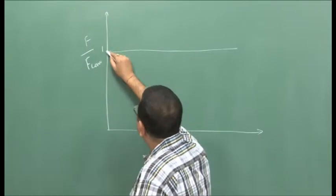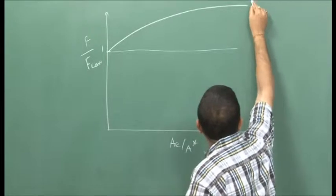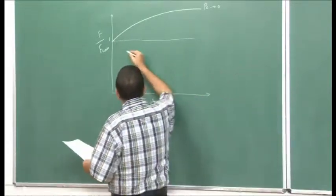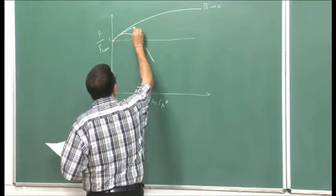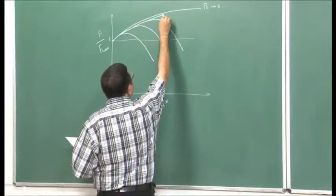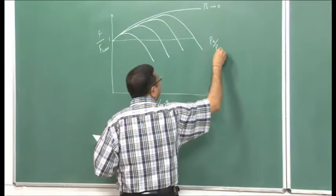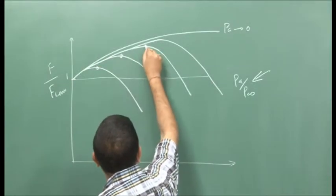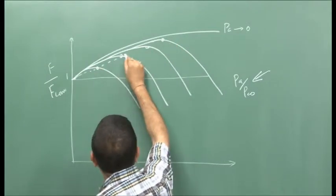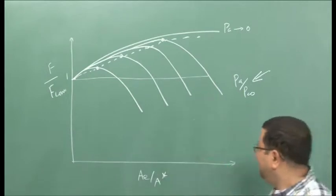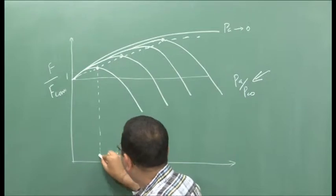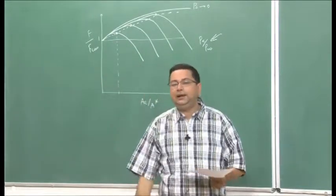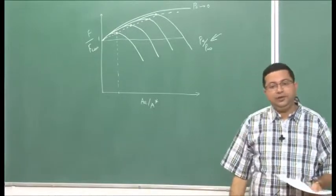For the limiting case when atmospheric pressure tends to zero, we get the ultimate thrust. For other values of atmospheric pressure, the thrust increases, reaches a maximum, and then starts to decrease, as Pa/Pc0 increases. There is a point corresponding to each value of Pa which gives the optimum thrust. This is the thrust produced when the area ratio is such that Pe equals Pa — that is, the exit pressure at the nozzle exit equals the atmospheric pressure — giving maximum thrust, because the expansion is ideal.